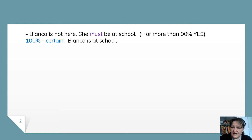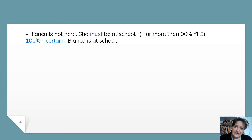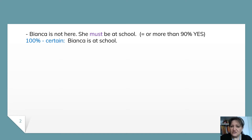For 100% yes — that means when I am certain — I just use the verb to be: Bianca is at school. When I make a guess, when I suppose that Bianca is at school but I consider it 90% true, then I say she must be at school.